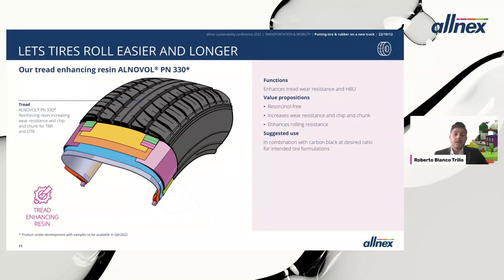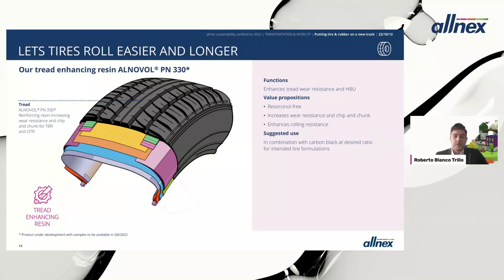This reinforcing resin is specifically for tread compounds — compounds with a relatively high SSBR content. This resin is able to increase the durability of the tire, meaning the wear resistance and chip-and-chunk resistance, and it also reduces heat buildup, making energy loss better. We have confirmed results for TBR and OTR as well as PCR, which came in very recently.